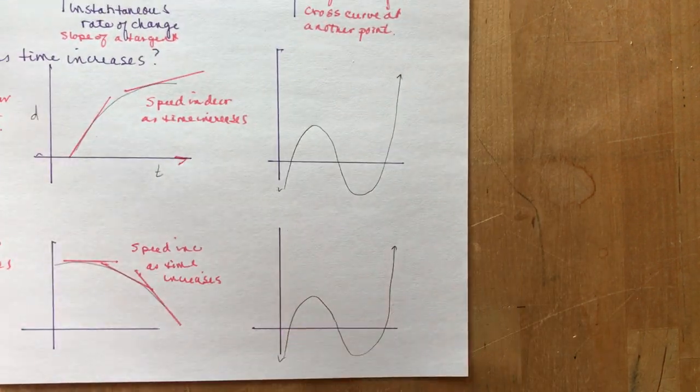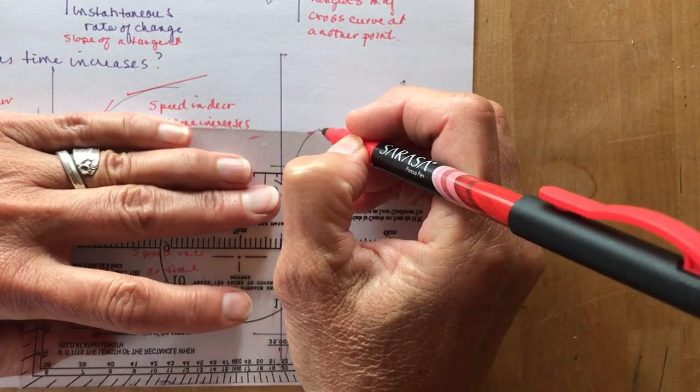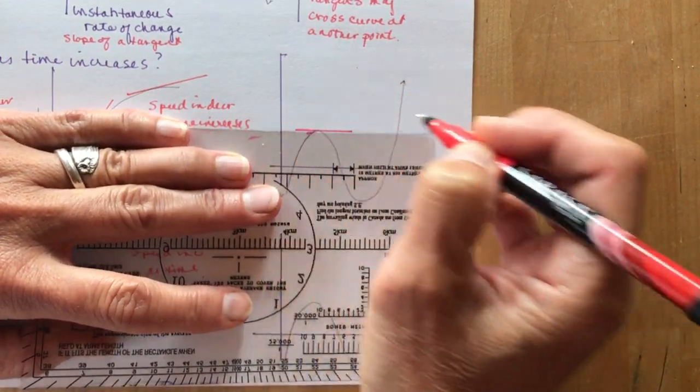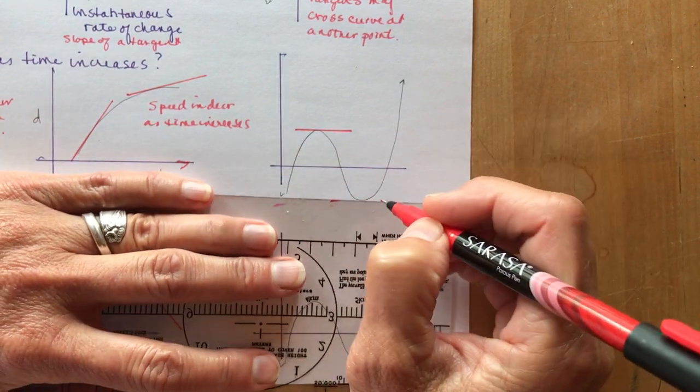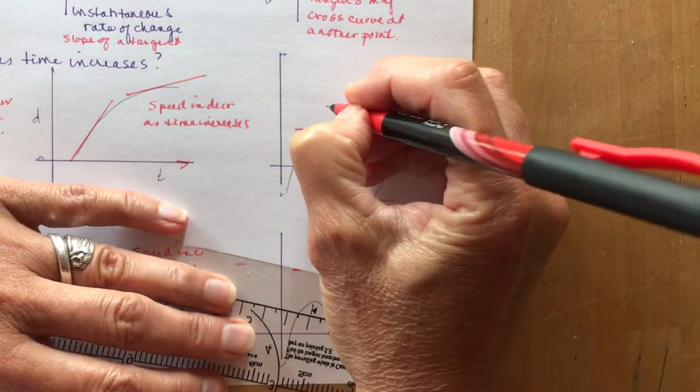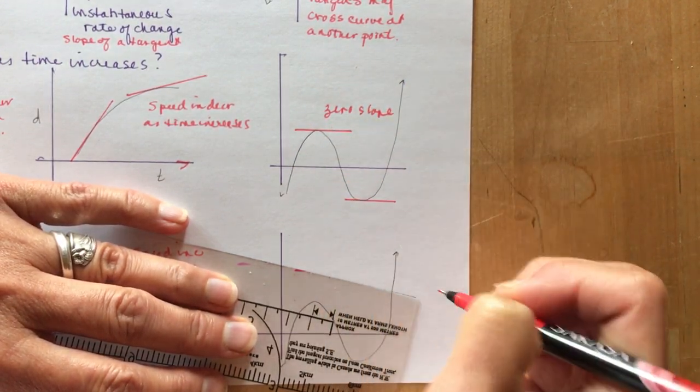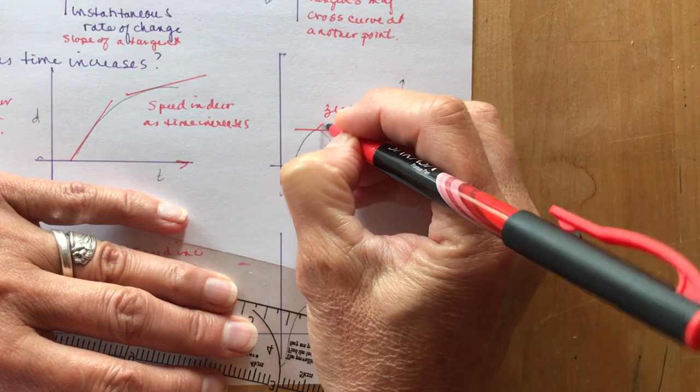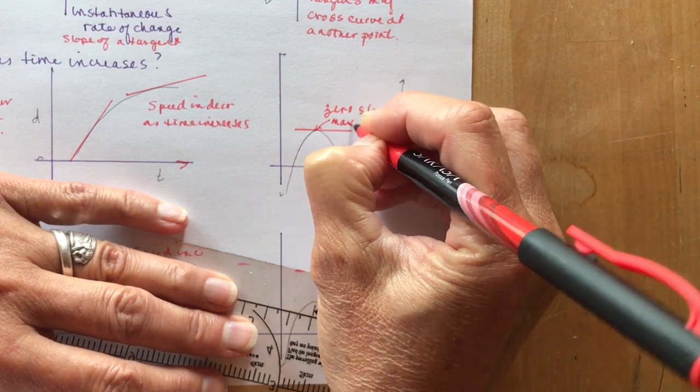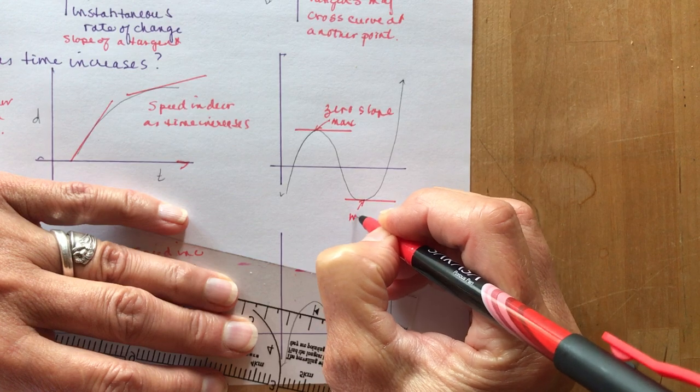The other thing you need to understand is if I have a tangent line like this, right at this point here, the tangent line would have a slope of zero. Zero slope, and that occurs at both maximum and minimum values. This is at a maximum because it's the highest point, and here this is a minimum value.